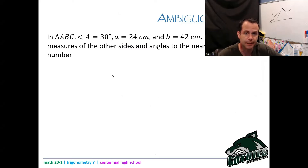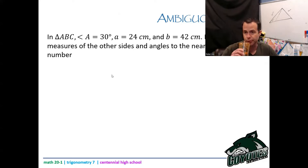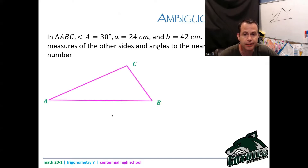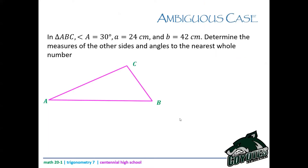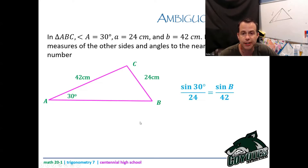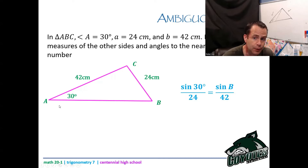In triangle ABC, angle A is 30 degrees, little a — the side opposite angle A — is 24 centimeters, and b is 42 centimeters. Determine the measures of the other sides and angles to the nearest whole number. I'm going to draw a picture and label everything I know. Because I don't know the top angle, that allows this side to be swingable. The first thing I do is solve for sine B using the sine law: sine of 30 over 24 equals sine of B over 42.